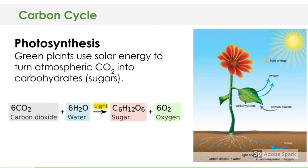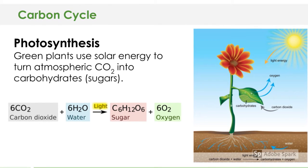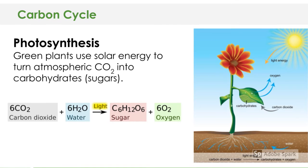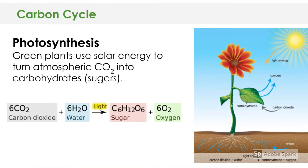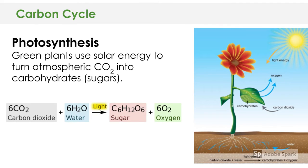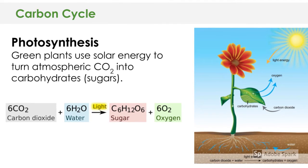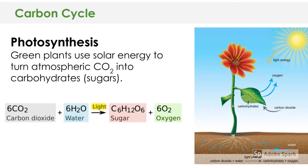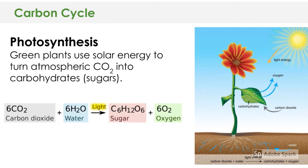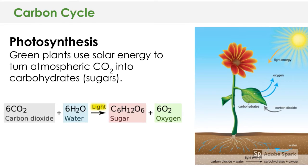As we remember from the last unit, photosynthesis is when green plants use solar energy to turn atmospheric carbon dioxide into carbohydrates and sugars. This is how we are able to get our energy from the sun — it is the link between the sun's energy and our own energy.